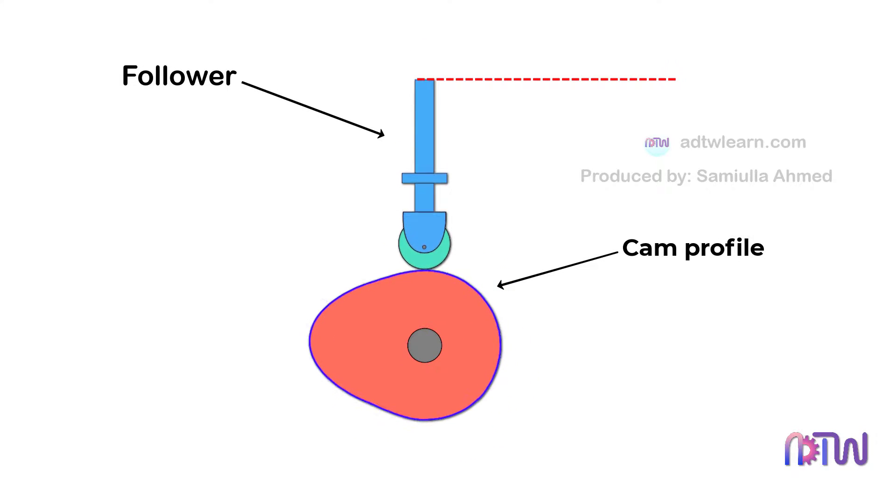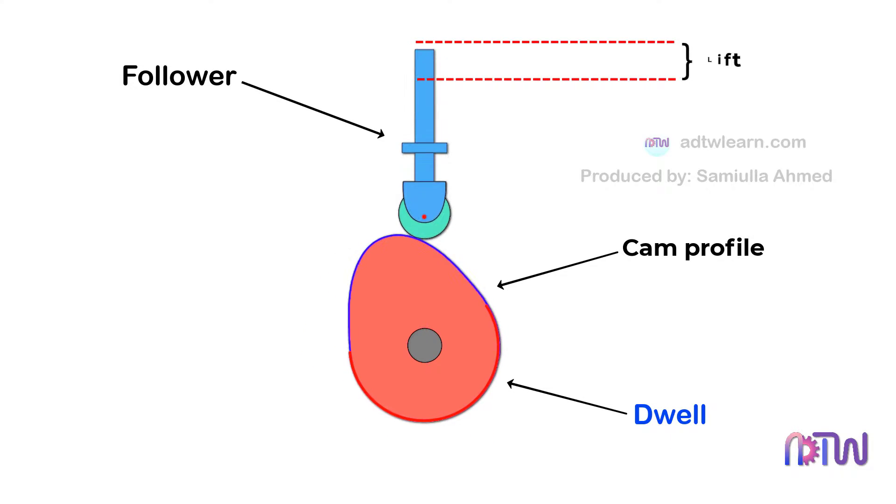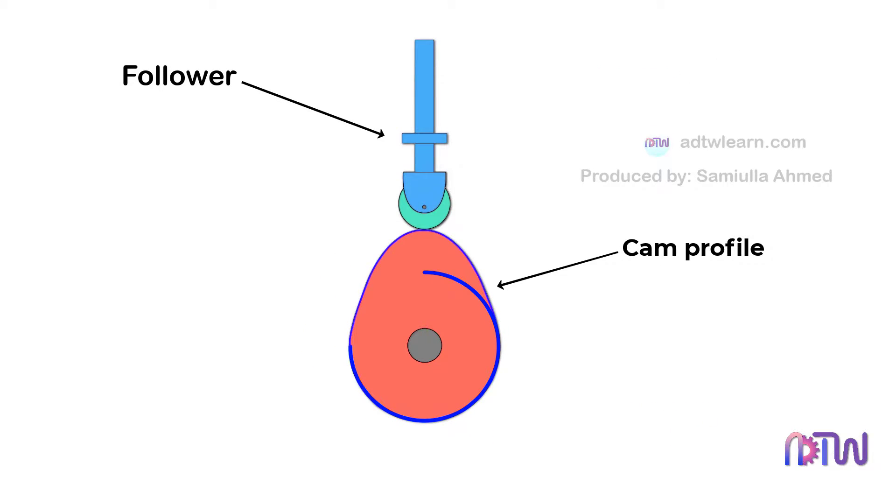The highest distance traveled by the follower during operation is called the lift of the follower, and the time spent by the follower in its bottom-most position during operation is called the dwell of the follower. The smallest circle that can be drawn tangentially to the cam profile is called the base circle.